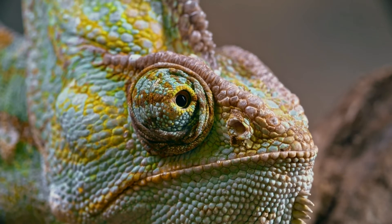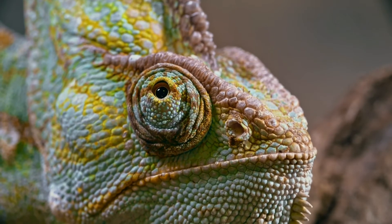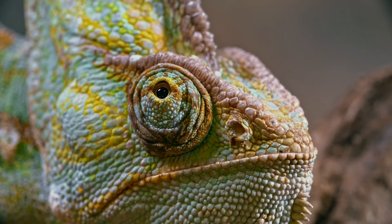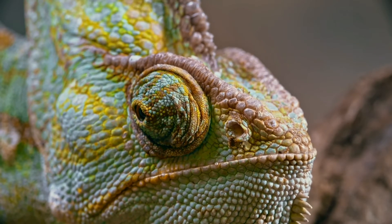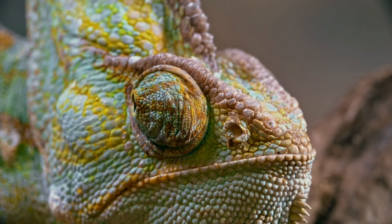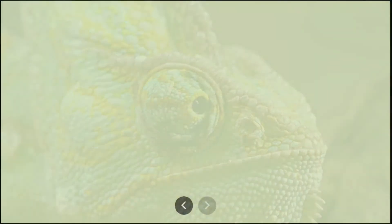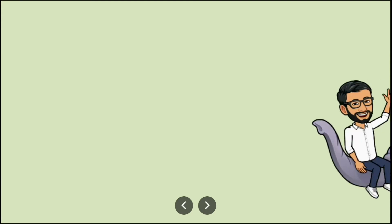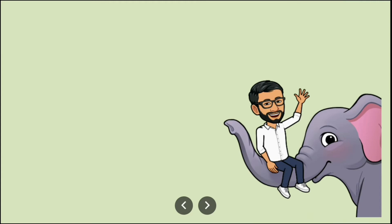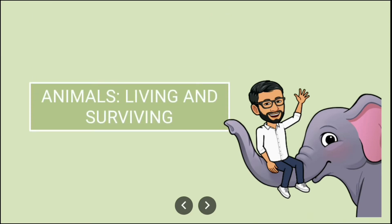In the natural world, a plant or an animal adapts or changes itself to suit its surrounding. This happens over hundreds and thousands of years. This process of changing to suit the surrounding is called adaptation. Today we are going to answer the questions related to adaptation. The name of the chapter is 'Animals Living and Surviving.'